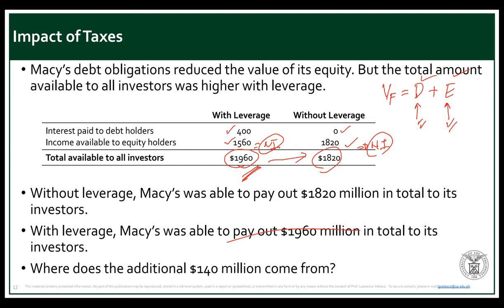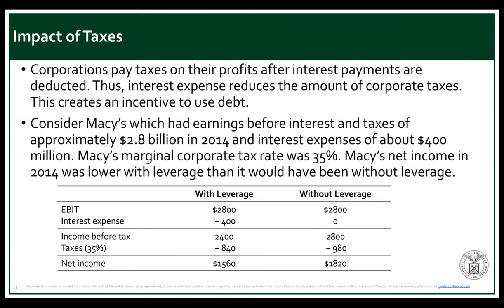This difference is called the tax shield due to interest. The $140 million additional came from paying less tax. Think of EBIT of $2.8 billion as a pie being divided: with leverage, $400 goes to debt, $840 to the government, and $1,560 to equity. Without leverage, $980 goes to the government and $1,820 to equity. The government is not part of the corporation — it is an outflow that reduces the firm's value.